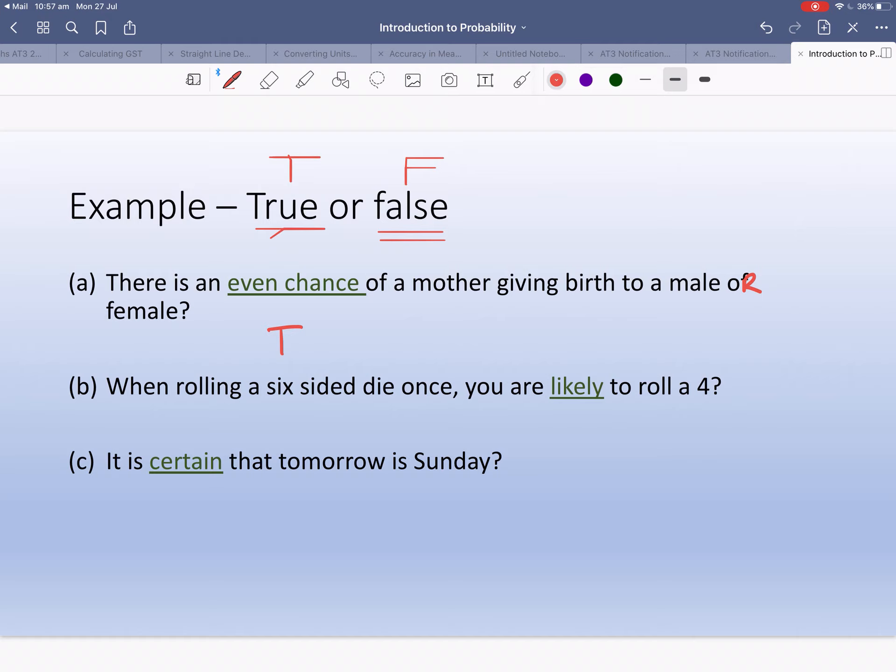When rolling a six-sided die, so a die that has one to six, it is likely to roll a four. Now I think that's unlikely, and the reason for that is that we have all these numbers - one, two, three, five and six - that it could also roll in, and a four is just one out of six.